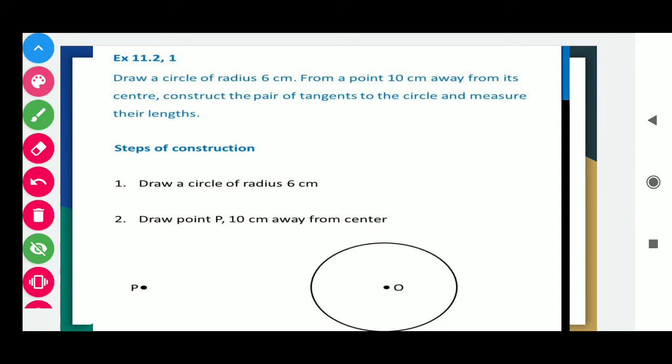Draw a circle of radius 6 cm from a point 10 cm away from its center, construct the pair of tangents to the circle and measure their length. In this question we have to draw a circle of radius 6 cm, take a point which is 10 cm away from the center, and after that construct the pair of tangents to the circle and measure their length.